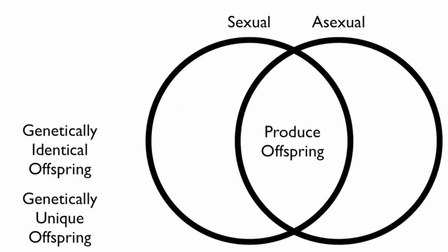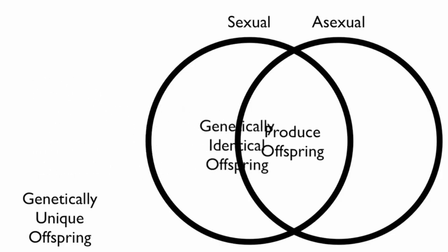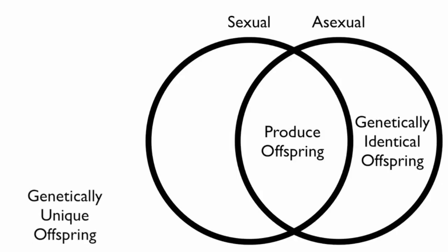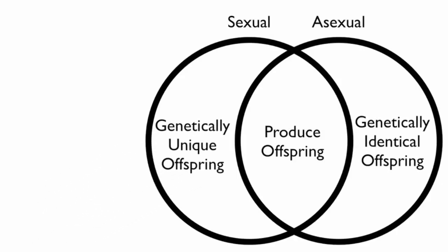However, asexual reproduction makes genetically identical offspring. Sexual reproduction makes genetically unique offspring.